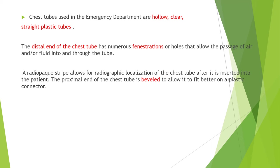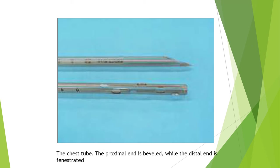Chest tubes used in the emergency department are hollow, clear, straight plastic tubes. The distal end has numerous fenestrations or holes that allow the passage of air or fluid into the tube. A radiopaque strip allows for radiographic localization of the chest tube after insertion. The proximal end is beveled to allow a better fit on a plastic connector. The proximal end's distal portion is fenestrated for suction of air and fluids.